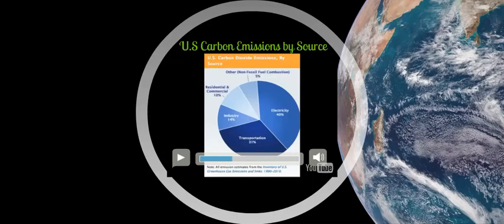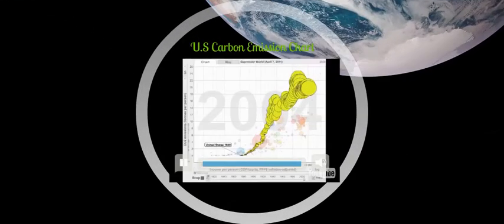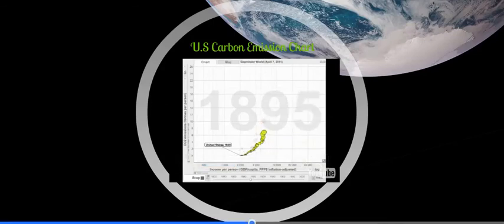Displayed above are the percentages of U.S. carbon emissions by source. The chart displays a visual representation of the level of carbon dioxide emissions in the U.S. from 1820 to 2000.